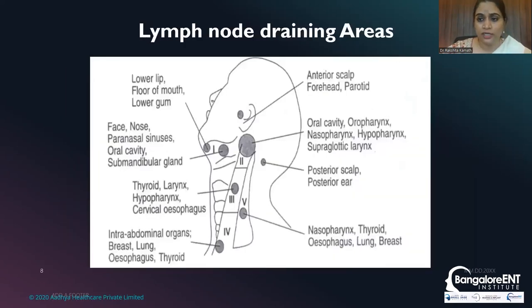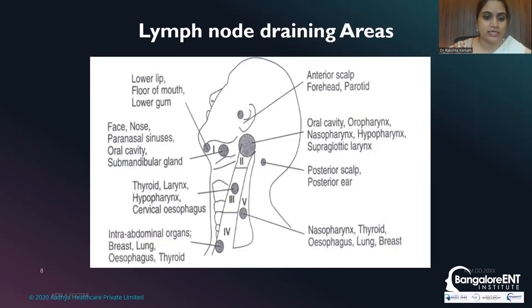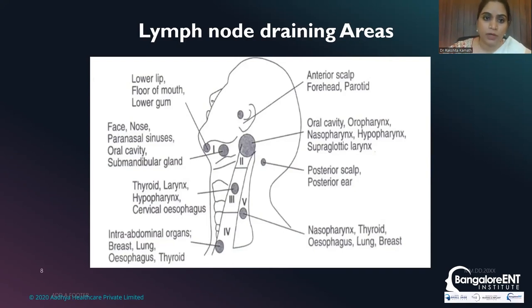Lymph node draining areas are extremely important, especially when patients present purely with lymph node metastatic swellings and we need to retrospectively determine the primary site. Level 1 drains the lower lip, floor of mouth, and lower gum. Level 2 drains the oral cavity, oropharynx, nasopharynx, hypopharynx, supraglottic, and laryngeal areas. Level 3 drains the thyroid, larynx, hypopharynx, and cervical esophagus. Level 4 relates to intra-abdominal organs.